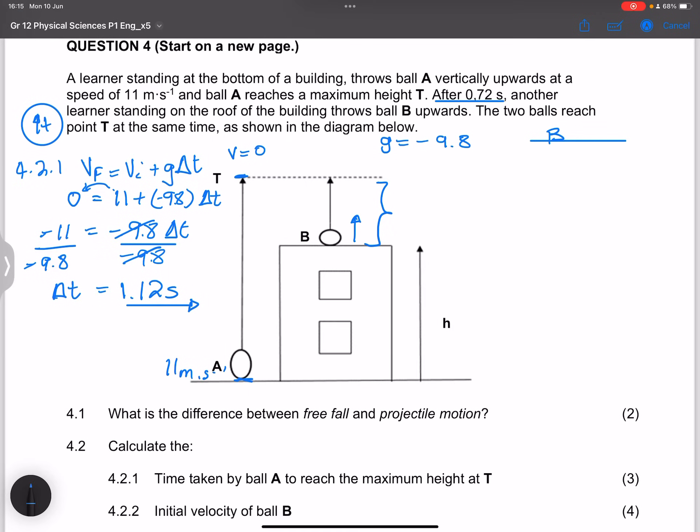Now we're looking for the initial velocity. We know its final velocity at this stage will be 0. So again, the very same equation. For 4.2.2, I know that I'm going to say VF is VI plus G delta T. Final velocity 0, we are looking for initial velocity. Gravitational acceleration is negative. But now we know the time that it took. We said that's 0.4 seconds.